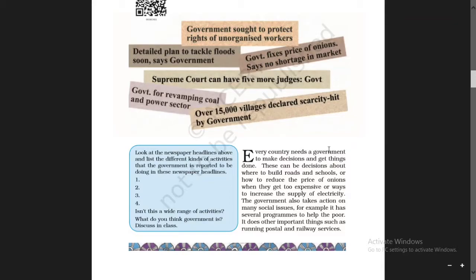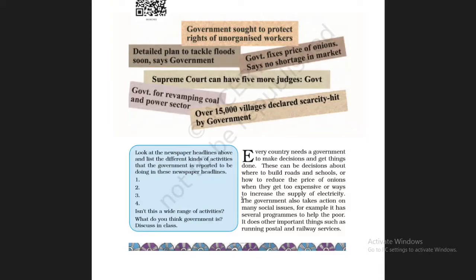A clear plan: every country needs a government to make decisions and get things done. This can be decisions about where to build roads and schools, or how to reduce the price of onions when they get too expensive, or ways to increase the supply of electricity. Every country needs a government in order to run and make the country progress in every way.